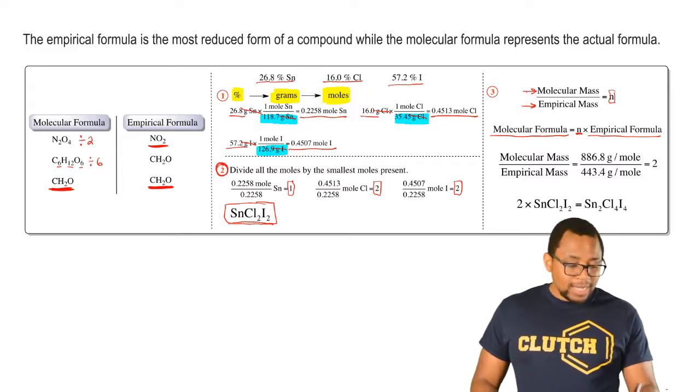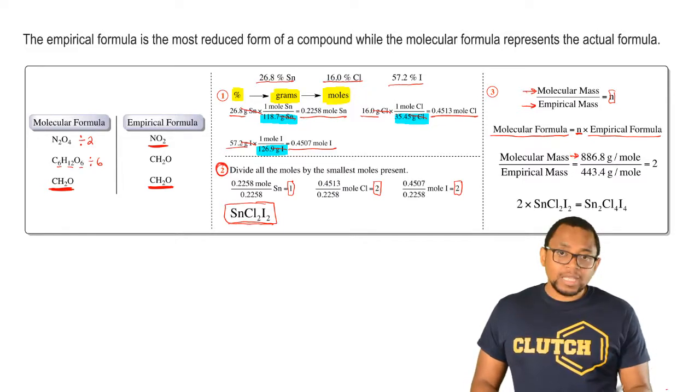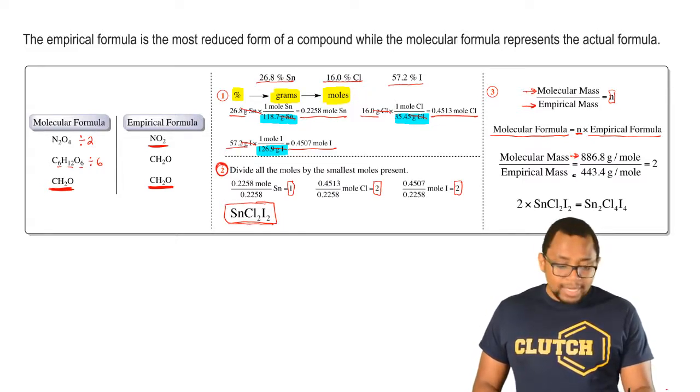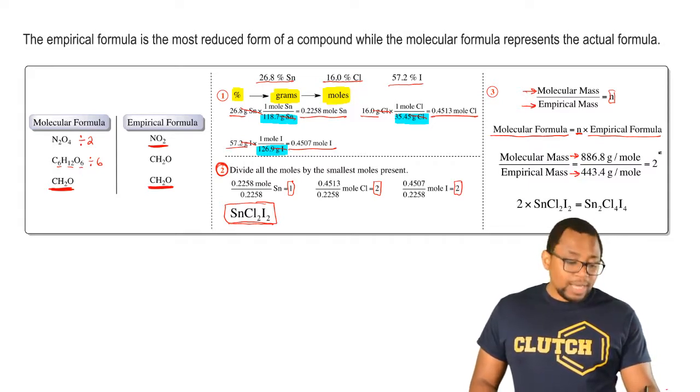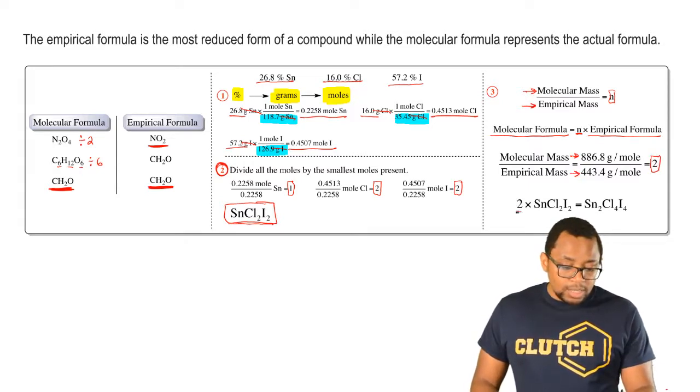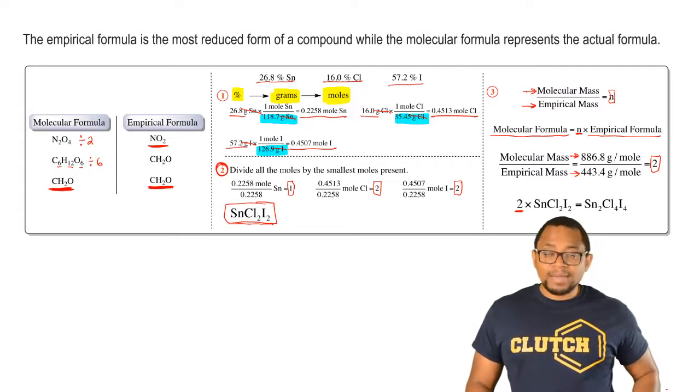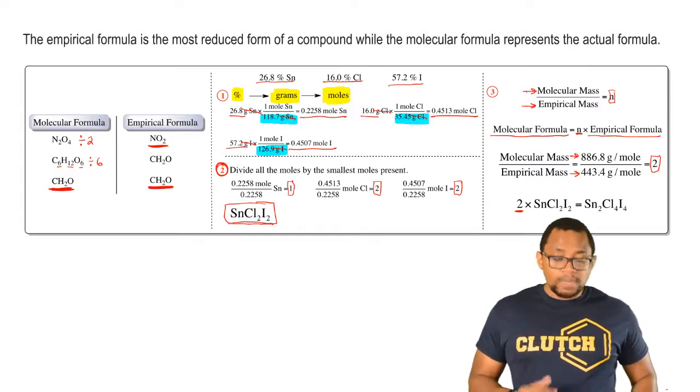We're told that the mass of the compound is this. We've added up the tin, chlorine, and iodine to give us our empirical mass. When you do that, you get two. Then you just multiply your empirical formula by that number and that gives you your molecular formula.